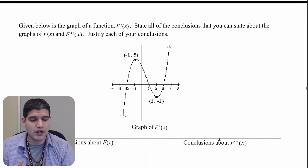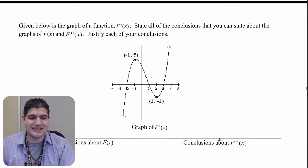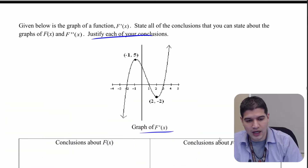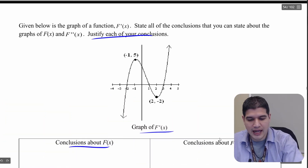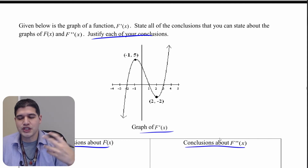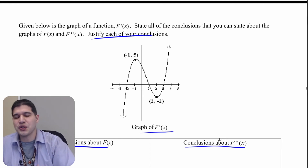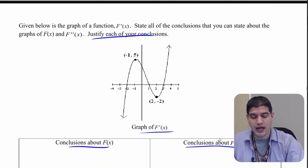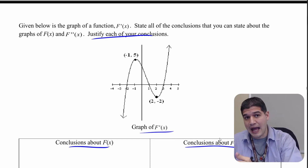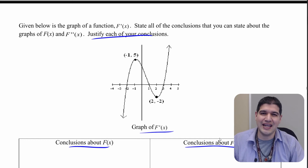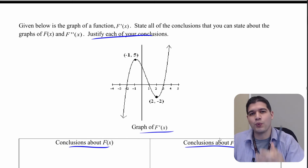In this next part, what we are given is f prime. We want to make conclusions about f and about the second derivative. Think about which direction you're going and what conclusions you can make. It's a little easier to go from f prime to the second derivative rather than going straight from f prime to f, but write down as many conclusions as you can.